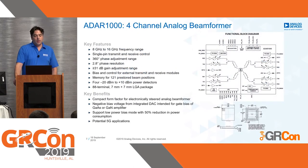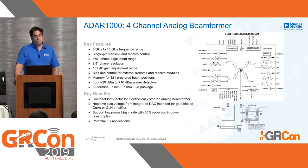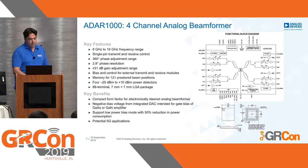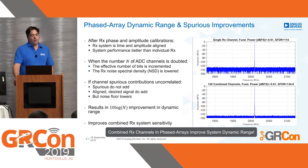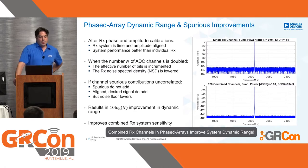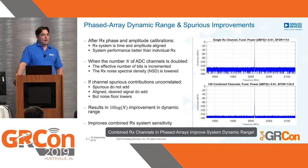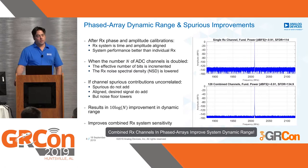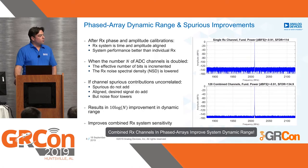Here's an example of an analog beamformer — a four-channel one. It can adjust the phase between zero and 360 degrees with certain resolution, and you can store settings in a fast hopping memory and recall them very quickly. After RX phase and amplitude calibrations, the system is time and amplitude aligned and performs better than an individual receiver. When the number of channels is doubled, the effective number of bits is also doubled and the noise spectral density is lowered. If the channel spurious contributions are uncorrelated, the spurious do not add, but the noise floor lowers — so we see a 10·log(N) improvement in dynamic range.